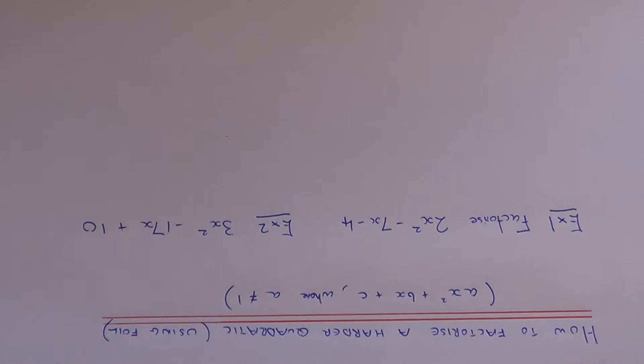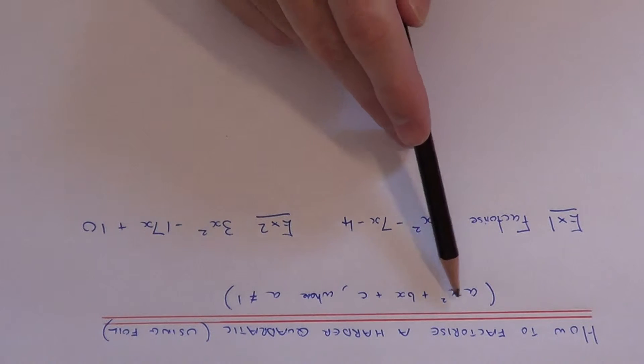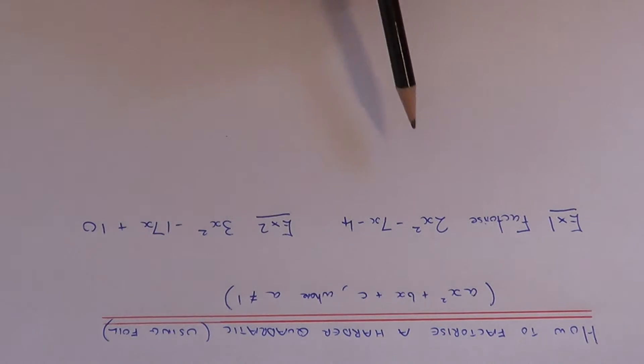Today I'm going to show you how to factorise a quadratic expression where the number before x squared is not equal to 1. These examples are harder than the normal ones which you have to do.